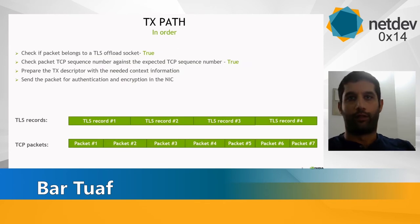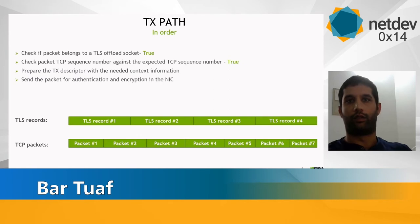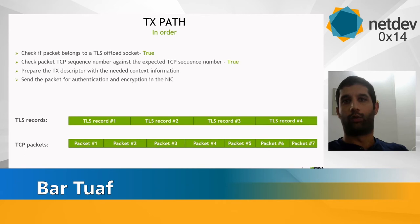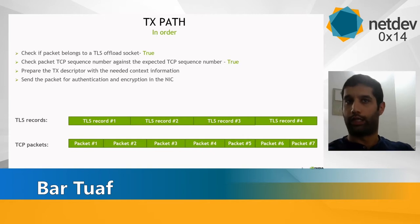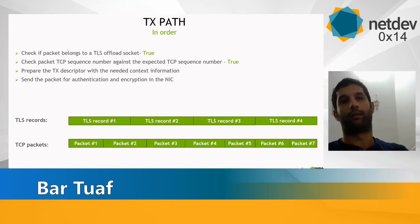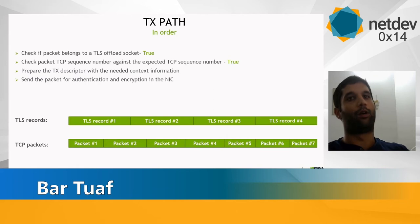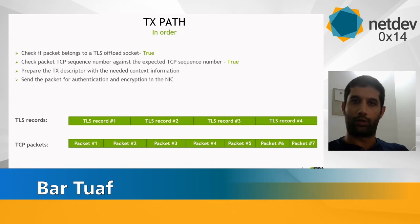We will start with the transmit flow, going through the conditions in the good path. First, the driver checks each packet whether it belongs to an offloaded socket. If true, it checks the packet's TCP sequence number and compares it to the expected number. If that also matches, it prepares a proper descriptor and forwards the packet for authentication and encryption on the fly by the NIC, sending it to the wire.